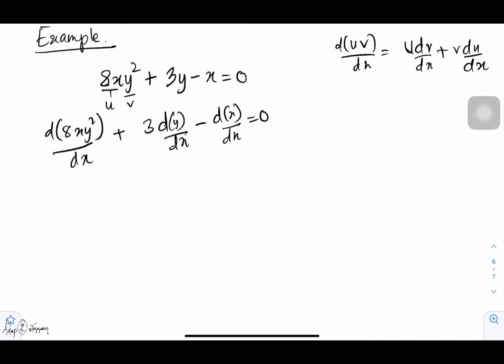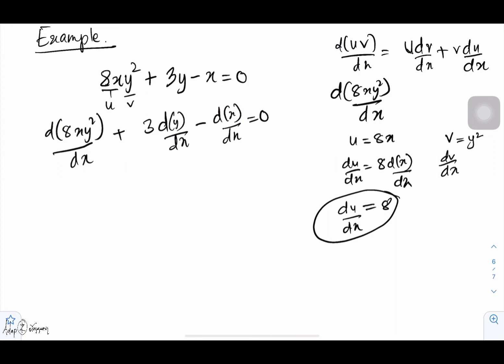In a separate side, I'm going to differentiate 8xy² with respect to dx and name u as my 8x value and v as my y² value. So differentiating u with respect to x is 8 times differentiation of x with respect to x, which is 8, because dx over dx is 1. So du over dx is 8.